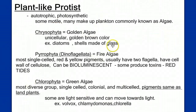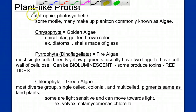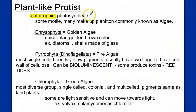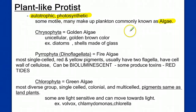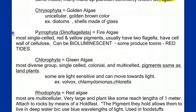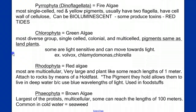Now let's move to our plant-like protists. What makes them plant-like? They're autotrophic — more specifically, photosynthetic. Some are mobile, and they make up the plankton community floating in the water, commonly known as algae. We're going to look at several groups: the chrysophyta, pyrrophyta, chlorophyta, rhodophyta, and phaeophyta.